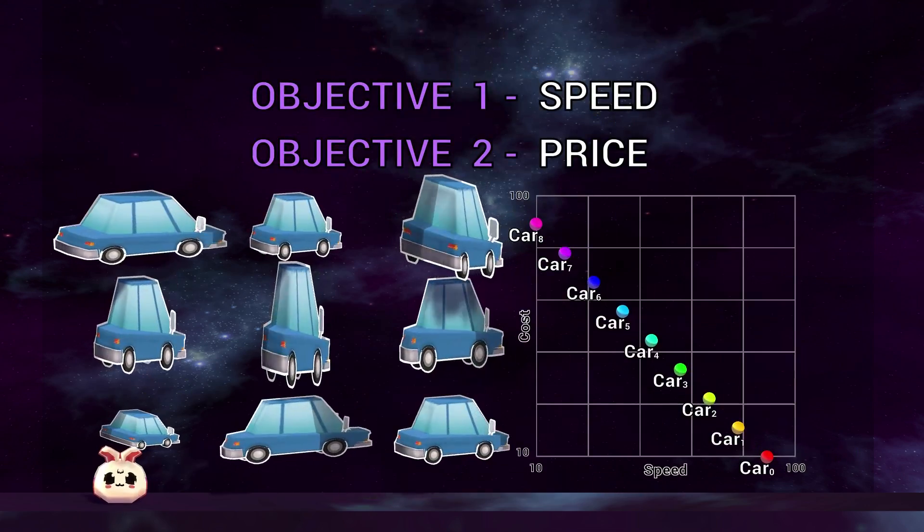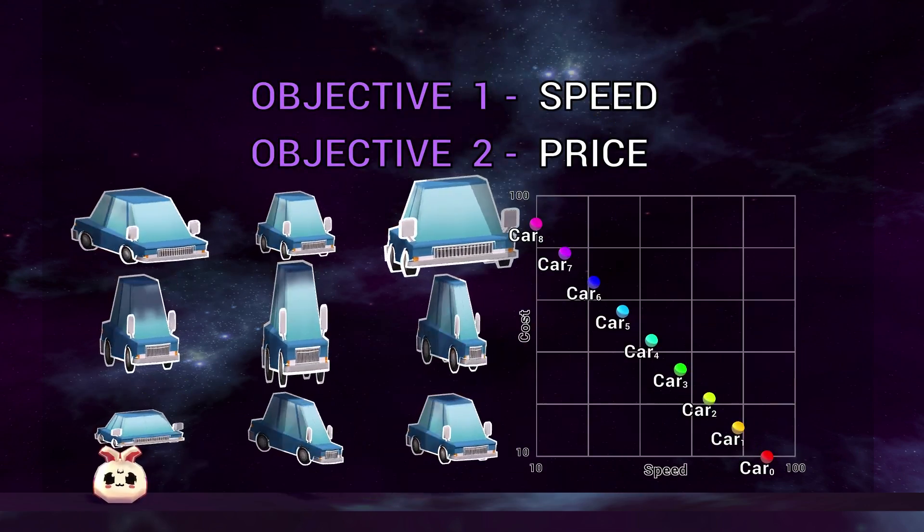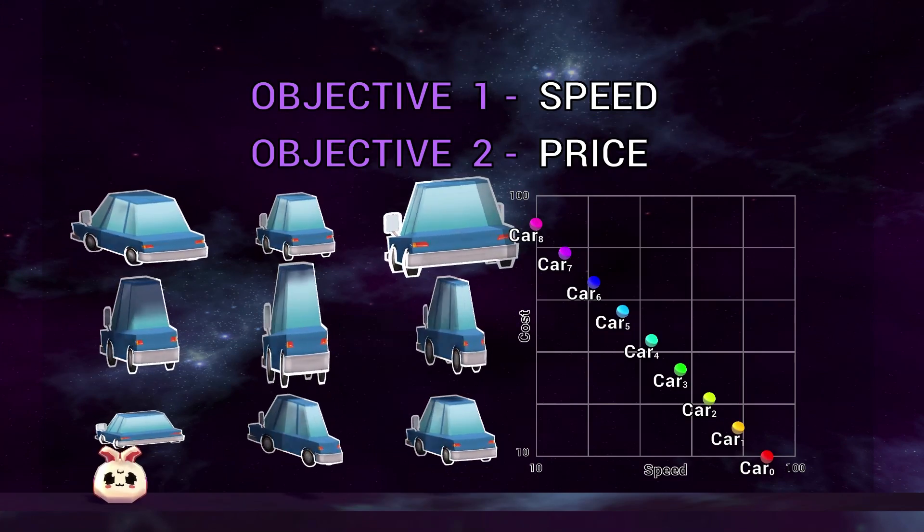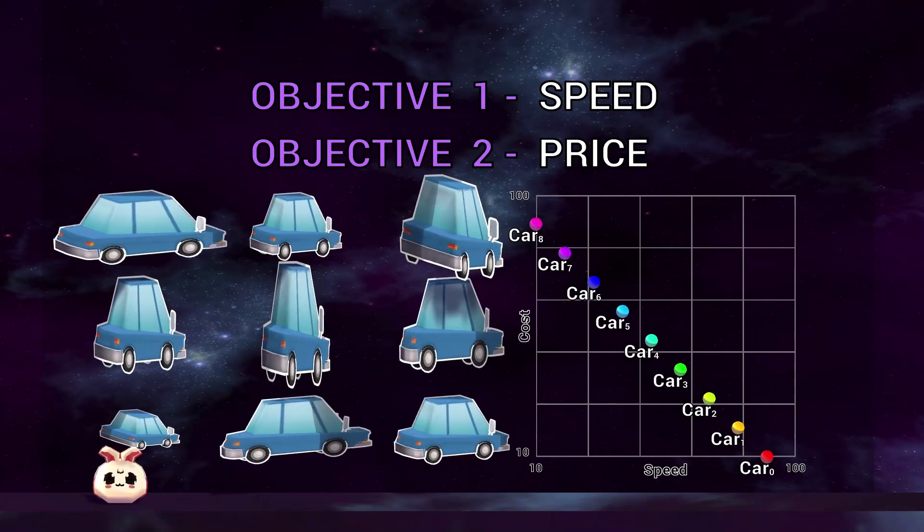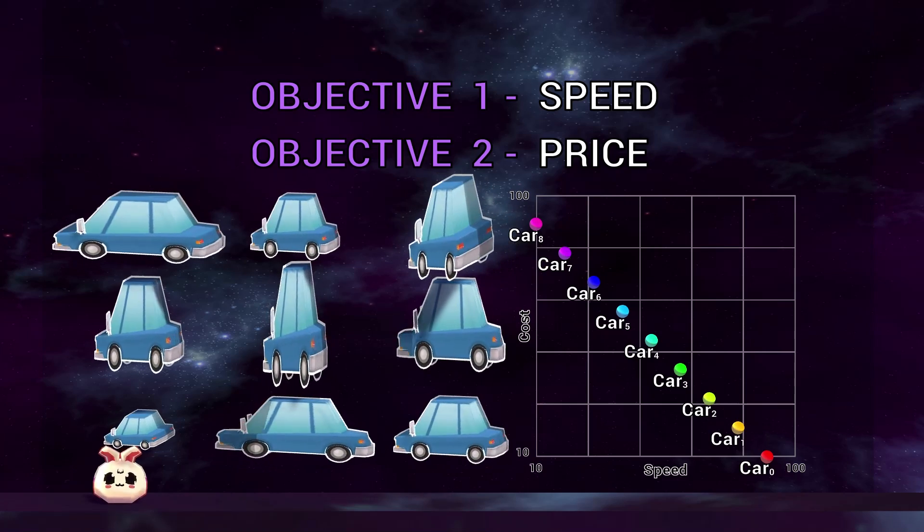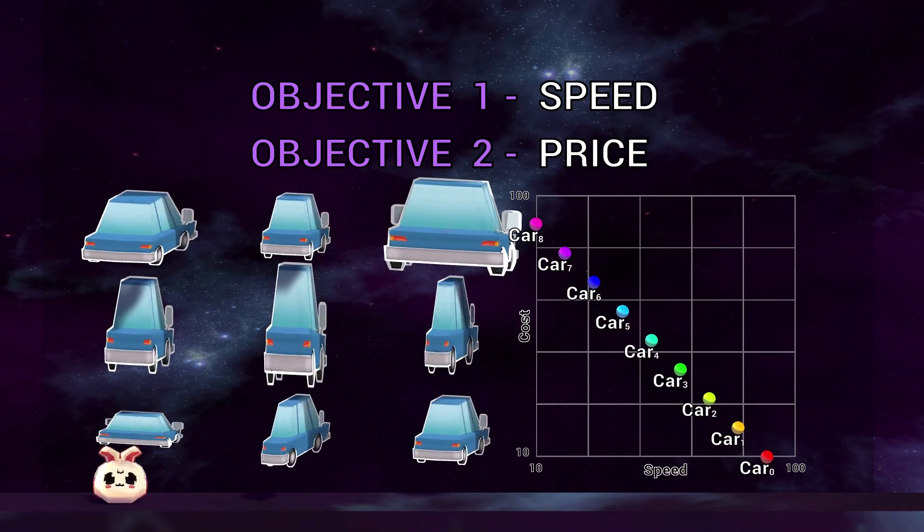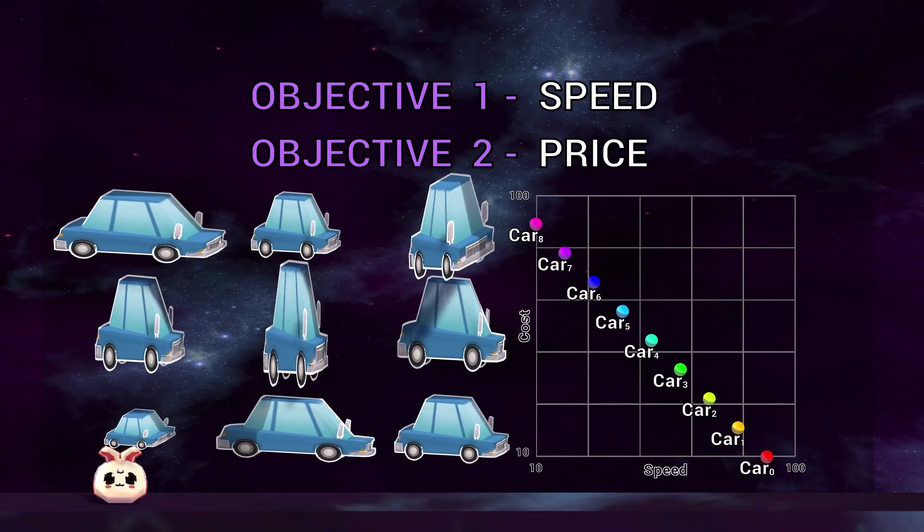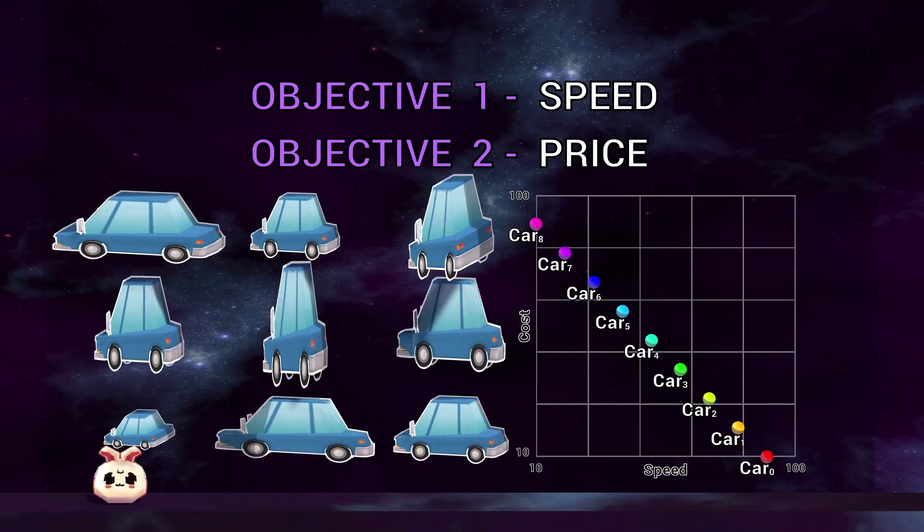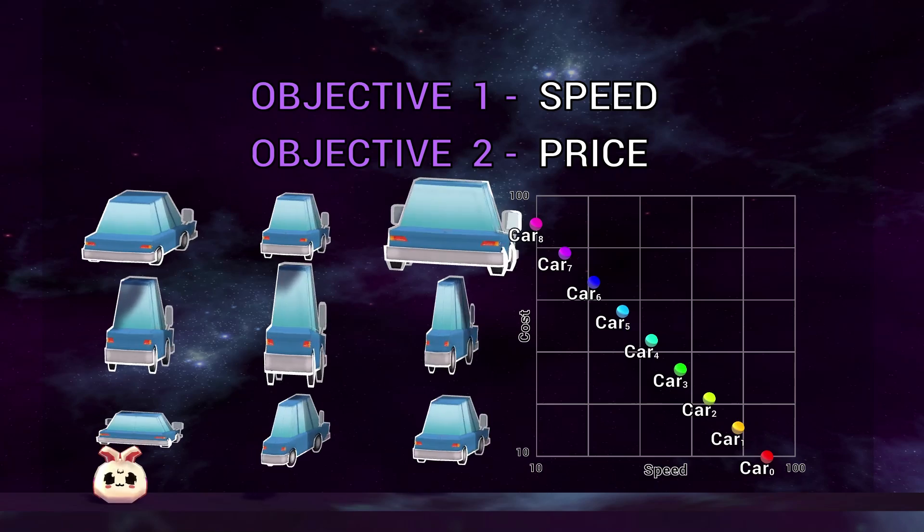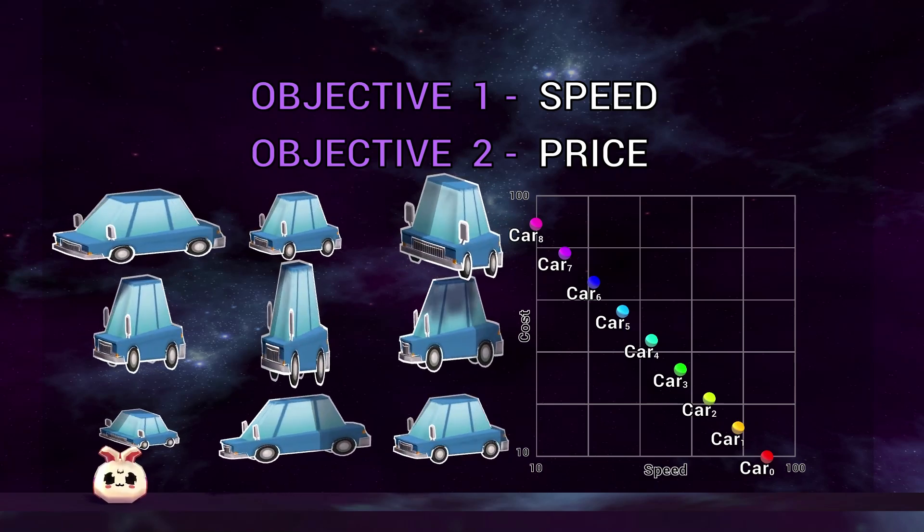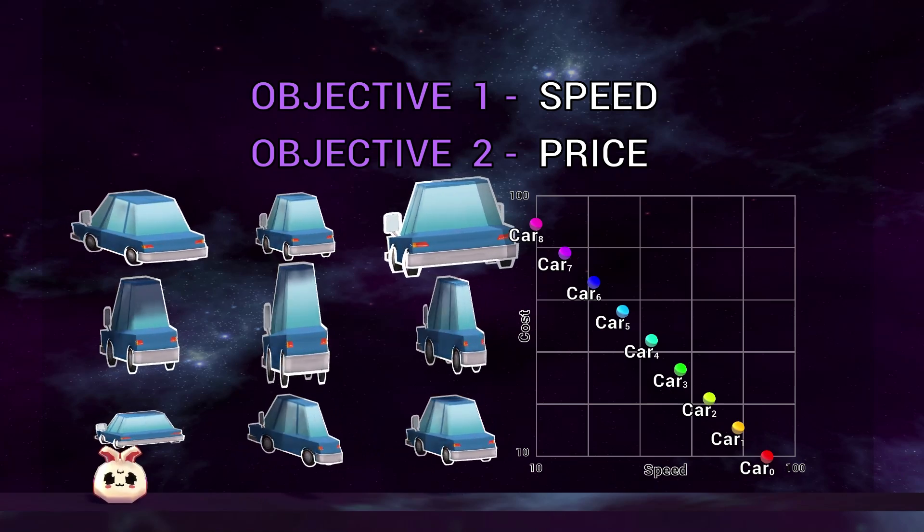Now from the last video on multi-objective problems, you'll remember that because there are two conflicting objectives, it's highly unlikely that there will be a single solution, or in this case a single car design, which offers the best performance for both objectives. That is, there cannot be a car which is both the cheapest and the fastest. There will always be a car that is slightly faster but more expensive, or a car that is slightly cheaper but slower.